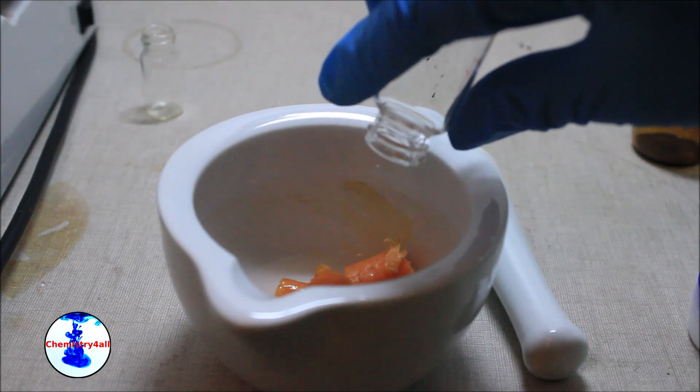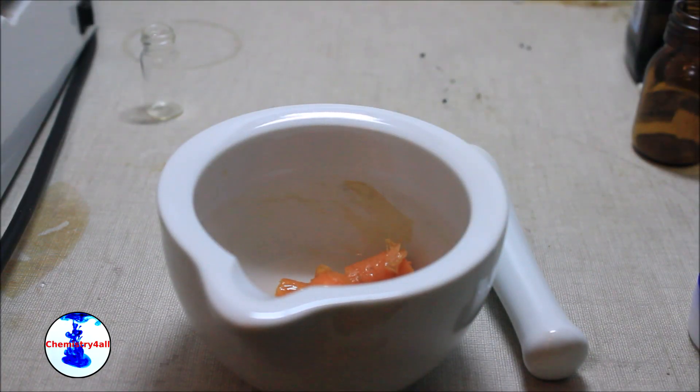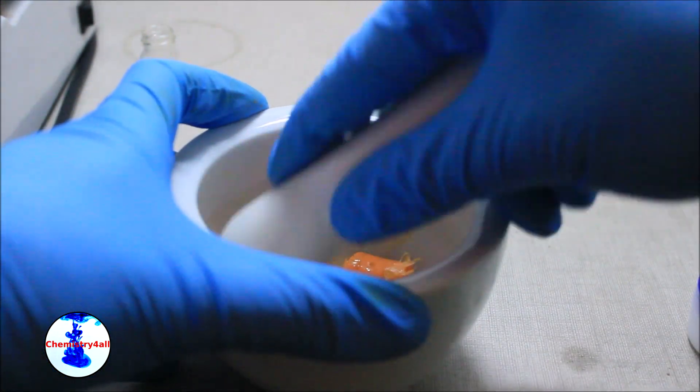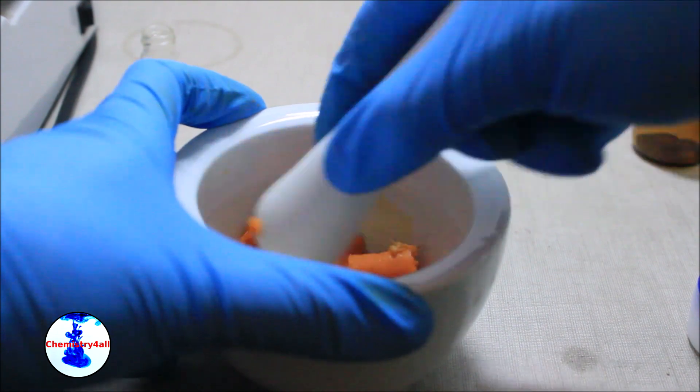Then, 10 mL of ethyl acetate are added to the carrot. The system is then triturated with the pestle until obtaining a homogeneous slurry.